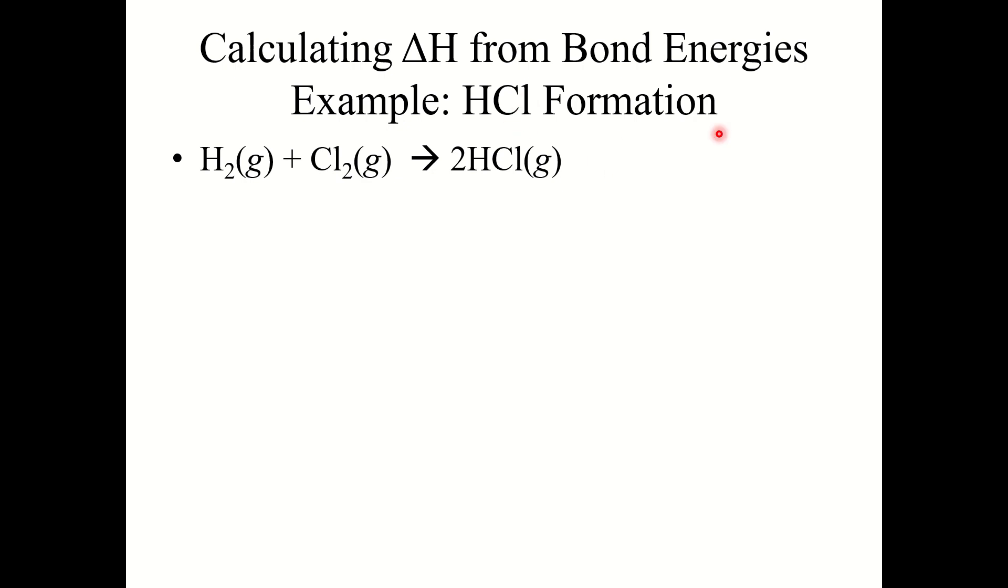Let's take a look at an example. Calculating delta H from bond energies. We're going to look at HCl formation. We want to calculate the delta H of this reaction. Draw out the Lewis structure. Hydrogen-hydrogen single bonded, chlorine-chlorine single bonded, and hydrogen-chlorine single bonded.